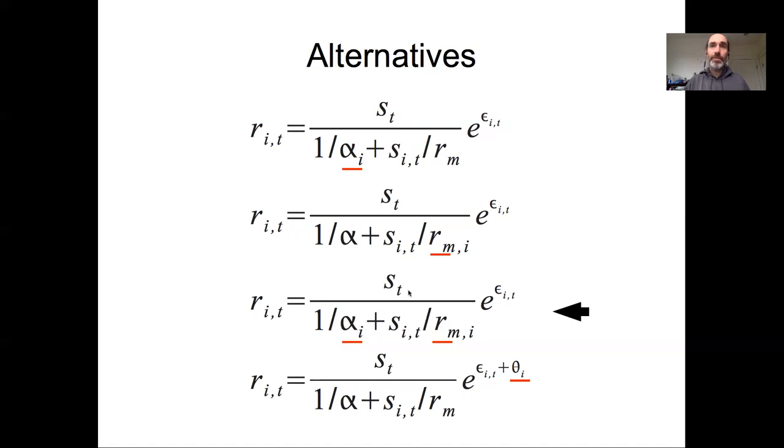For this case study, we're going to focus on this third example where we actually are going to put a hierarchical variability on both alpha and RM. We're going to allow stream to stream variability in both of these parameters.